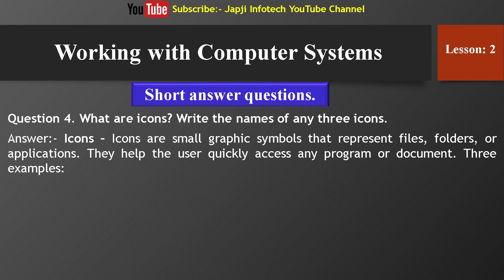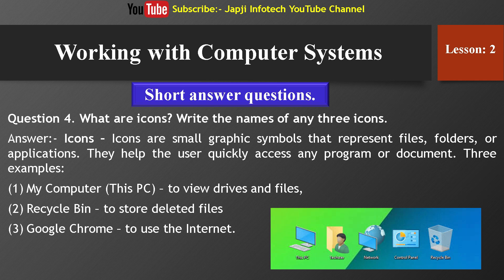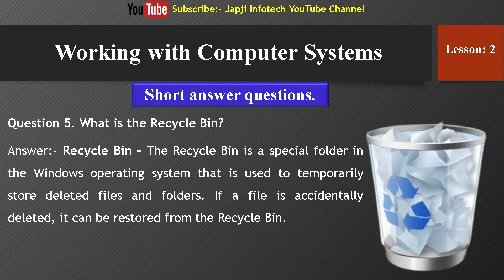Three examples of icons: First, My Computer — used to view drives and files. Second, Recycle Bin — used to store deleted files. Third, Google Chrome — used to access the internet. Fifth question: What is the Recycle Bin? The Recycle Bin is a special folder in the Windows operating system used to temporarily store deleted files and folders. If a file is accidentally deleted, it can be restored from the Recycle Bin.